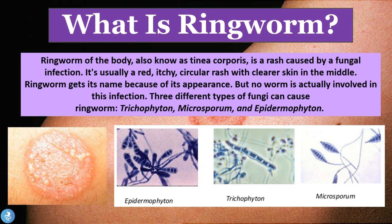So what is ringworm? Ringworm of the body, which is also known as tinea corporis, is a rash caused by a fungal infection. It is usually a red, itchy, circular rash with clearer skin in the middle. Ringworm gets its name because of its appearance, but no worm is actually involved in this infection.